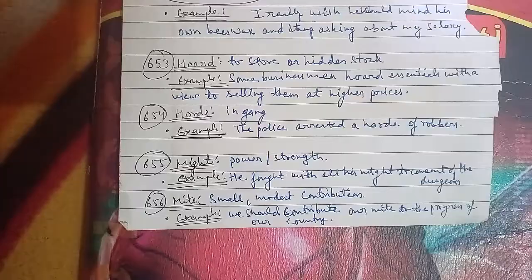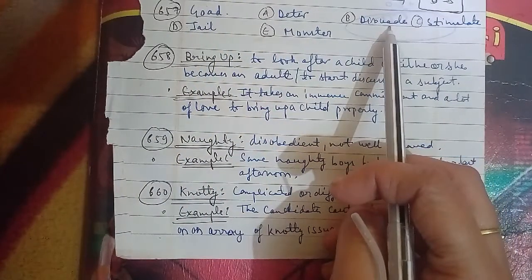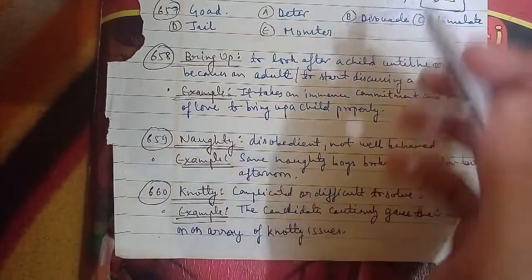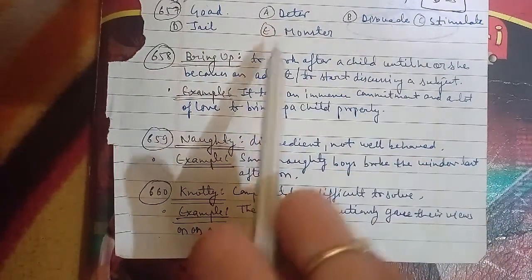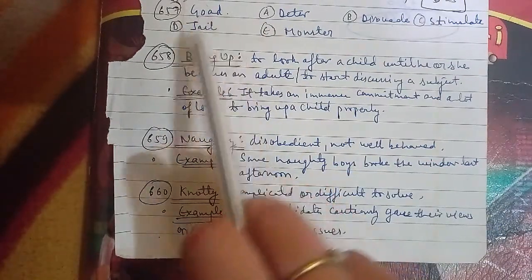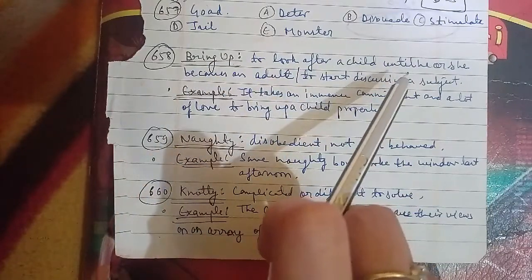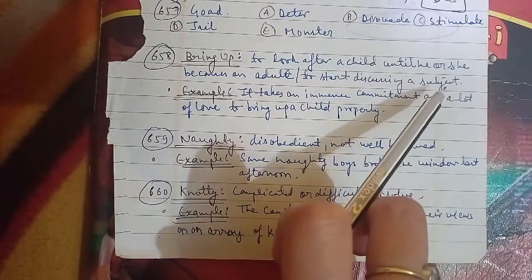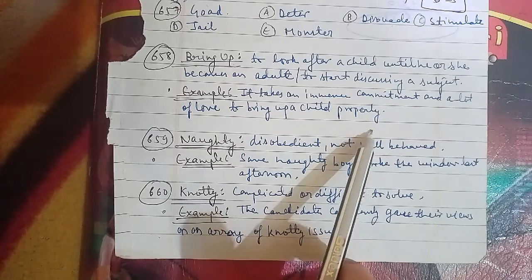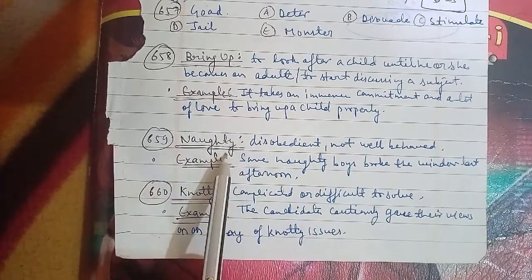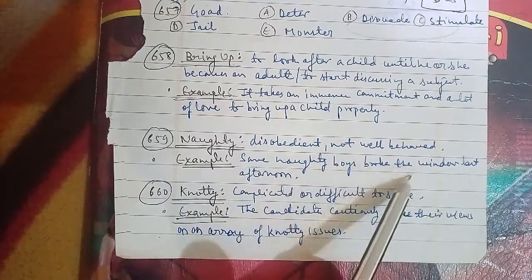The 658th word is 'bring up', which means to look after a child until they become an adult, or to start discussing a subject. Example: It takes immense commitment and a lot of love to bring up a child properly. The 659th word is 'naughty', meaning disobedient or not well-behaved. Example: Some naughty boys broke the window. The 660th and last word of the session is 'knotty', meaning complicated or difficult to solve. Example: The candidates cautiously gave their views on an array of knotty issues.